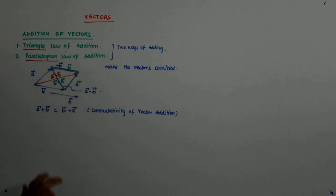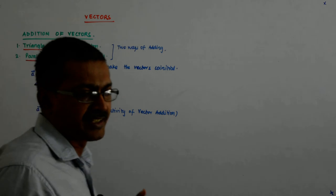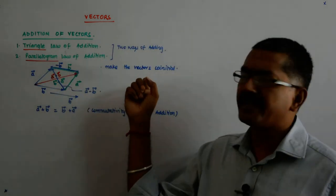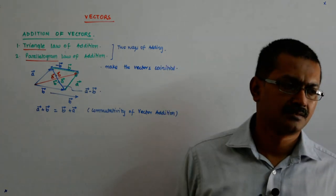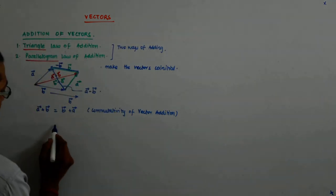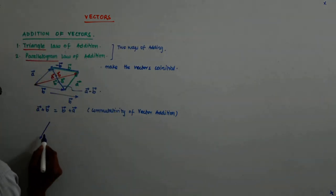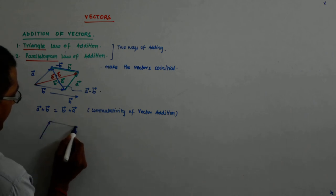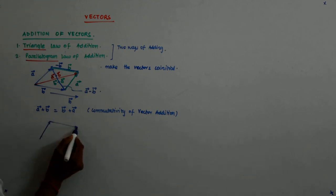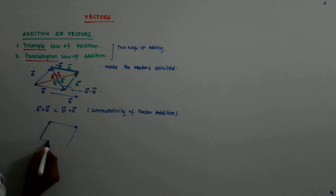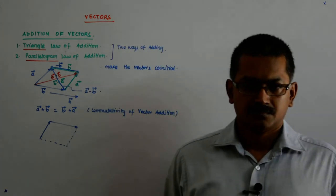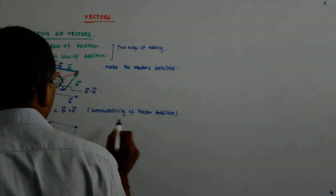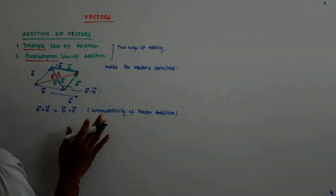What I am saying is: you first make them co-initial — make the vectors co-initial and then form the parallelogram. You could have taken B in the other position, yes you could have, no issues, and then form a parallelogram — yes you can, no issues. So this is called the commutativity of the vector, and we have proved that vectors are commutative.